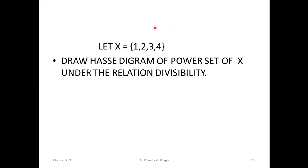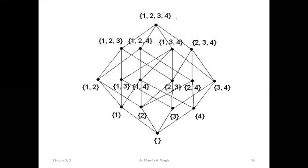Now suppose we have the set X = {1, 2, 3, 4}. We have to draw the Hasse diagram of the power set of X under the inclusion relation. The power set contains: the empty set, the singletons {1}, {2}, {3}, {4}, the pairs {1,2}, {1,3}, {1,4}, {2,3}, {2,4}, {3,4}, the triples {1,2,3}, {1,2,4}, {1,3,4}, {2,3,4}, and finally {1,2,3,4} — sixteen elements in total.